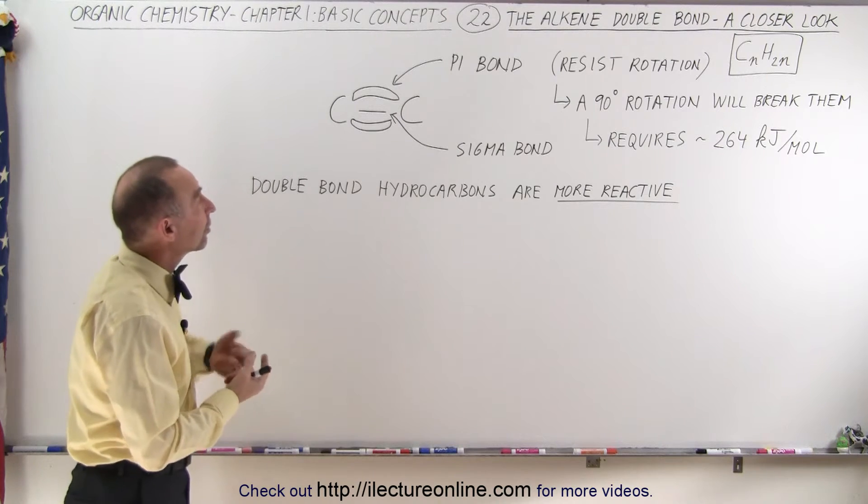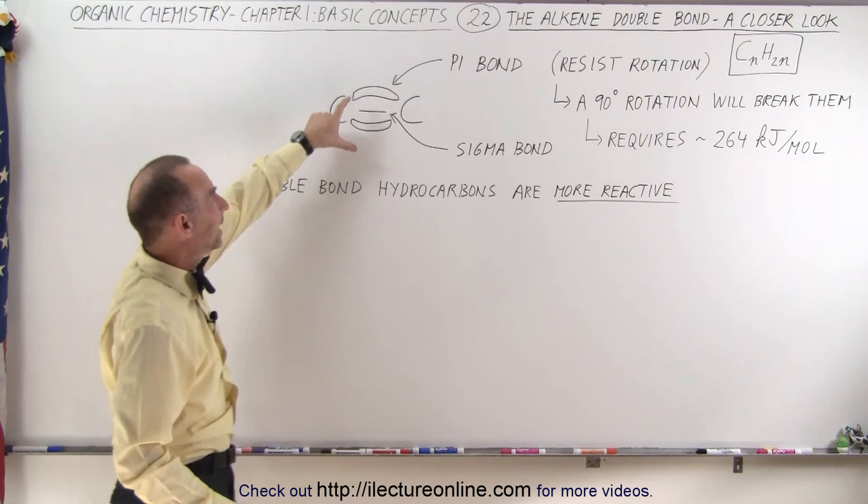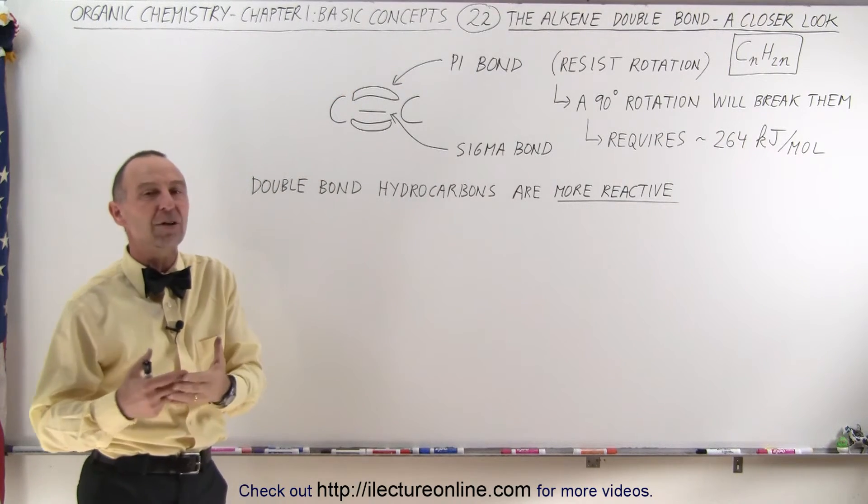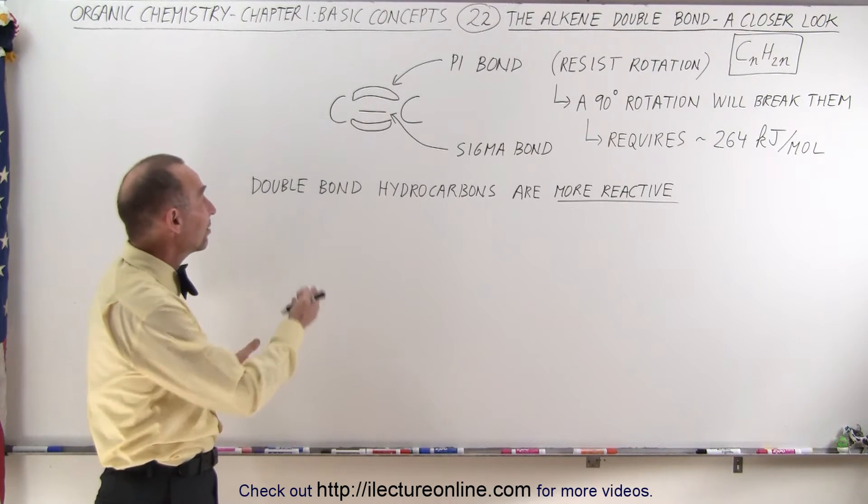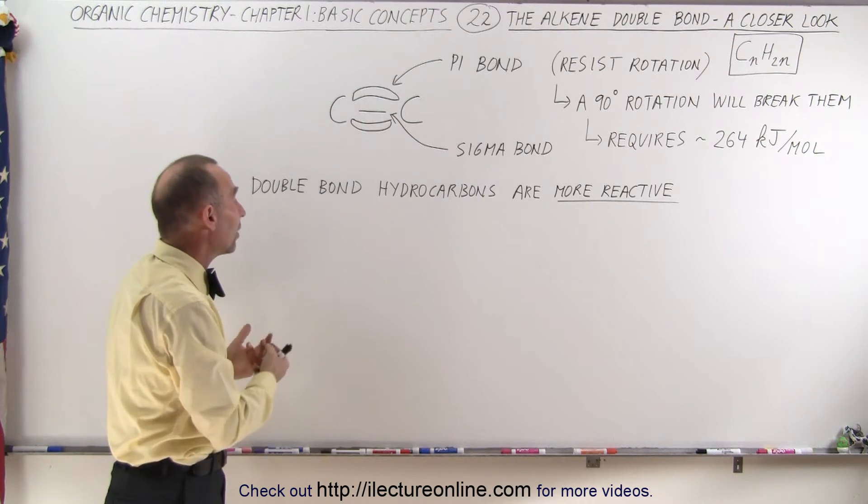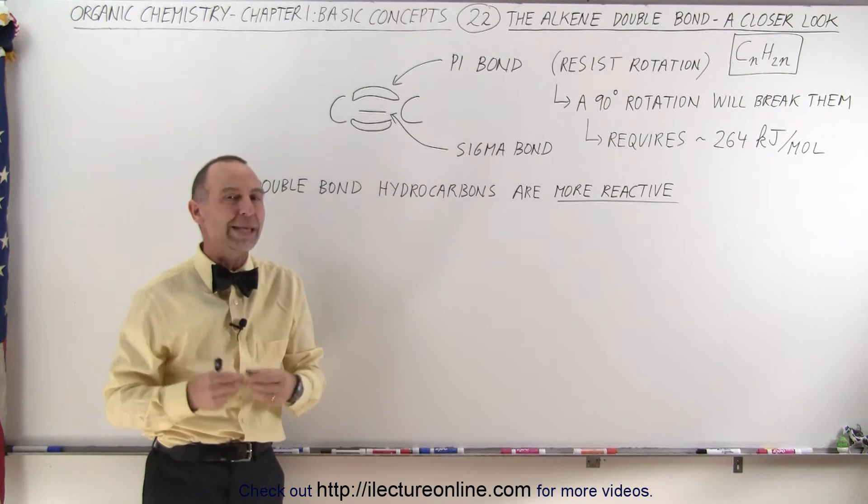First of all, the double bond consists of a sigma bond and a pi bond. Now, pi bonds are more easily broken than sigma bonds, which means that hydrocarbons that have double bonds, like the alkenes, are more reactive.